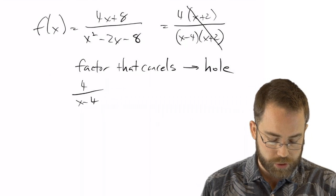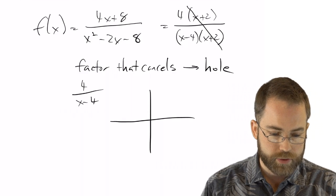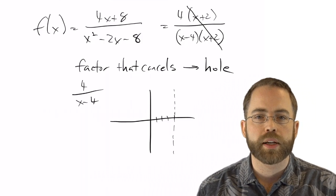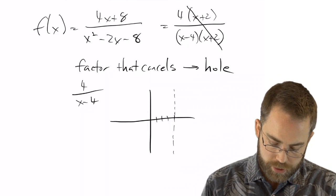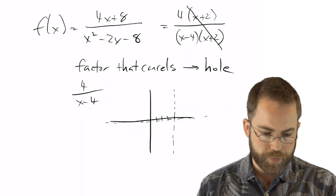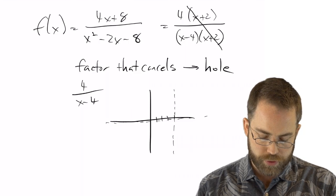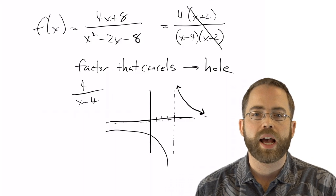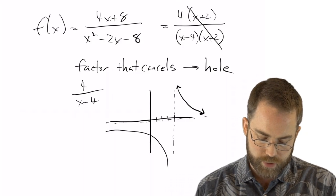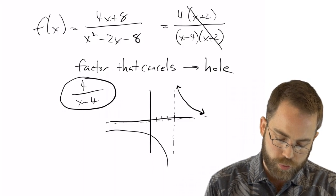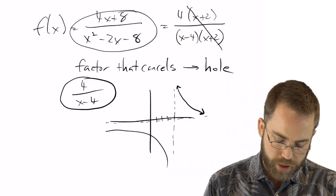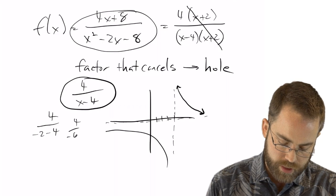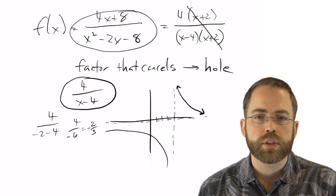After canceling, we graph 4 over x minus 4. When does the top equal zero? Never — the top is constant. When does the bottom equal zero? At x=4, so there's a vertical asymptote there. Who wins — top or bottom? The bottom has x and the top is constant, so the bottom wins, meaning we'll have a horizontal asymptote at zero. Plugging in large positive numbers greater than 4 gives a positive result, so the graph heads up toward zero from the right. To find where the hole is at x=-2, I plug negative 2 into the simplified function: 4 over negative 6, which is negative 2 thirds. So the hole is at (-2, -2/3).